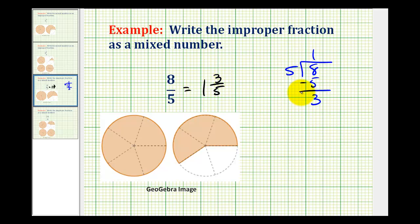Let's take a look at why this works. If we were to model eight-fifths, notice that every five-fifths represents one. So we could rewrite eight-fifths as five-fifths plus three-fifths. But five-fifths is equal to one, and one plus three-fifths is equal to one and three-fifths.